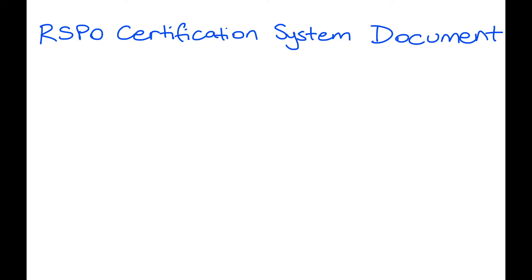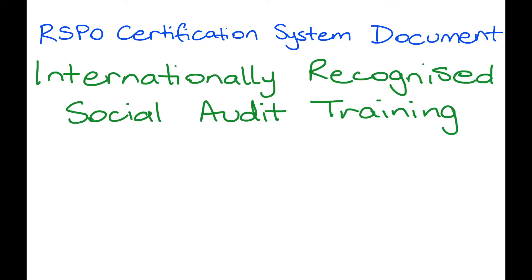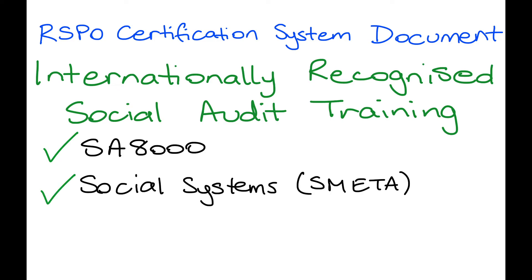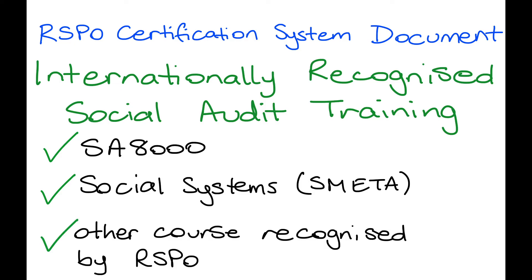As required by the above-mentioned key document, audit teams who are auditing against the RSPO scheme are required to have internationally recognised social audit training, such as the SA-8000, social systems — also known as SMETA — or other social auditing courses recognised by RSPO.